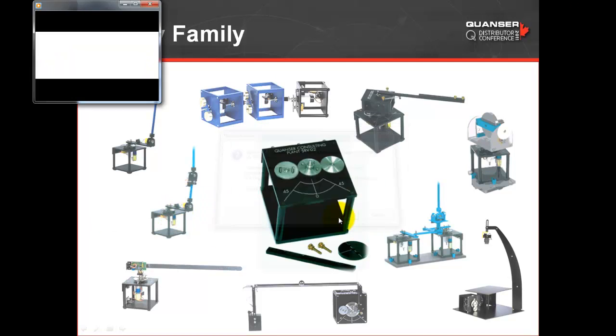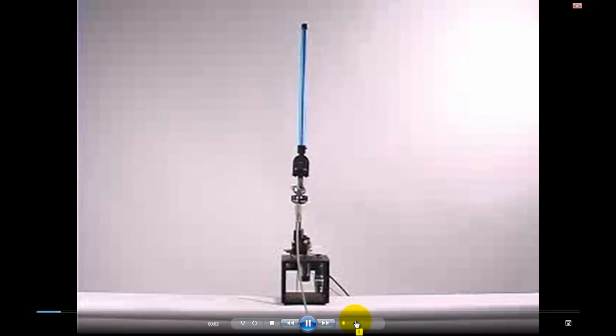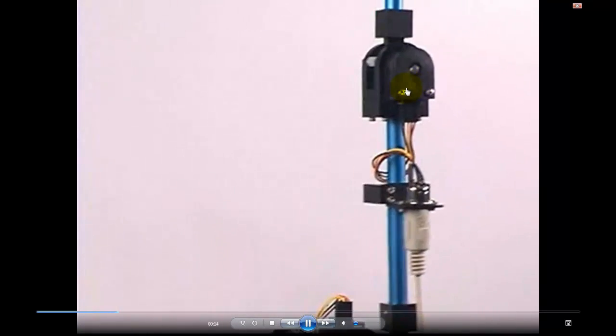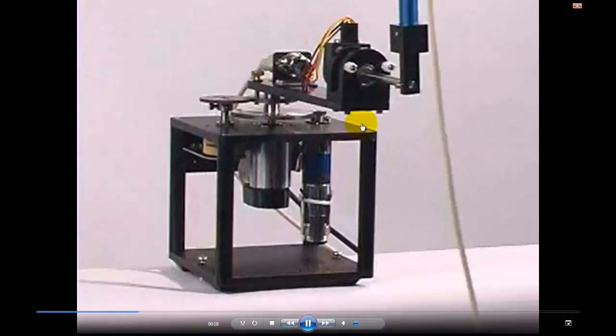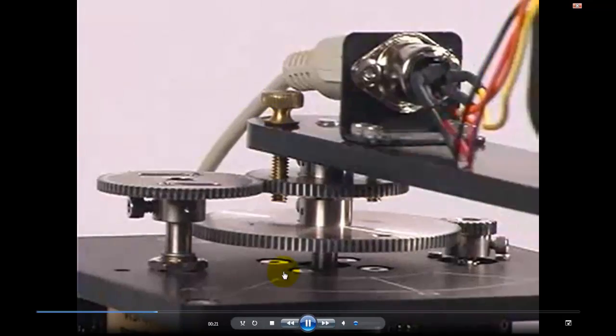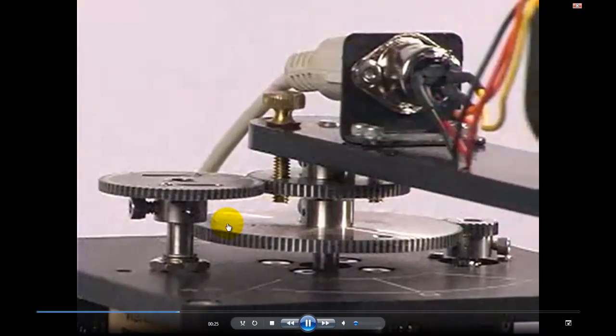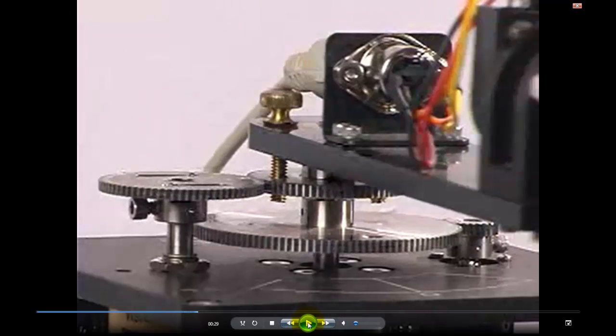Let's take a look at the double inverted pendulum. You've got an encoder at the top and at the bottom. Essentially the only actuator you have is right there, and so you're balancing both those pendulums using MATLAB, Simulink, and Quanser software to make this all happen.